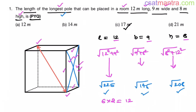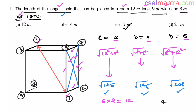How many body diagonals can a cuboid have? 4. From this corner to this corner — there are 4 such body diagonals. All of them are of equal length, that is √(L² + B² + H²).